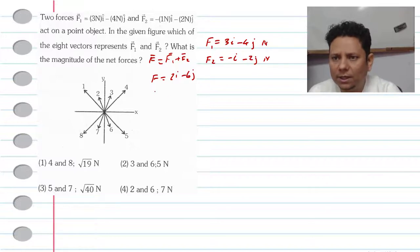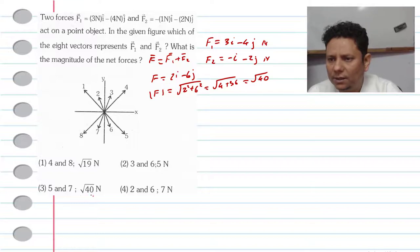When we talk about magnitude, F is the magnitude. So that will be equal to under root of 2 square plus 6 square. So that will be equal to under root of 4 plus 36 and under root of 40. So if we look at 4 options, I think option number 3 is under root of 40. So that should be our right answer.